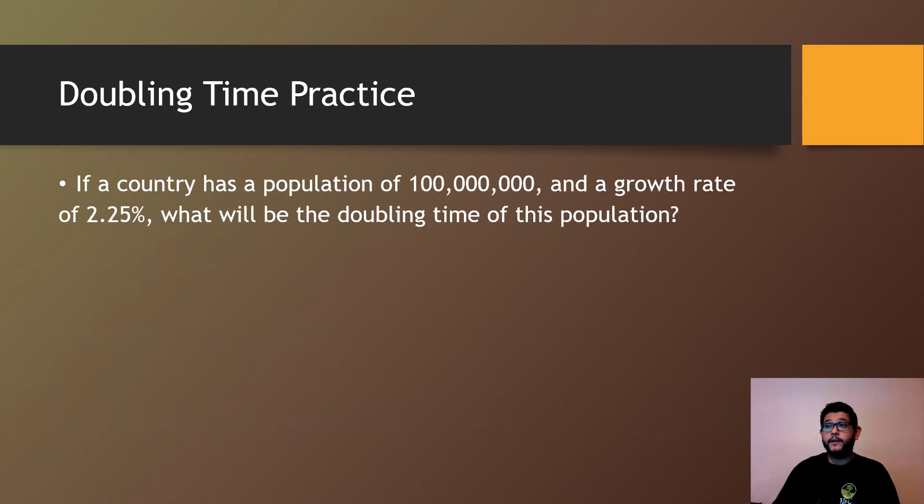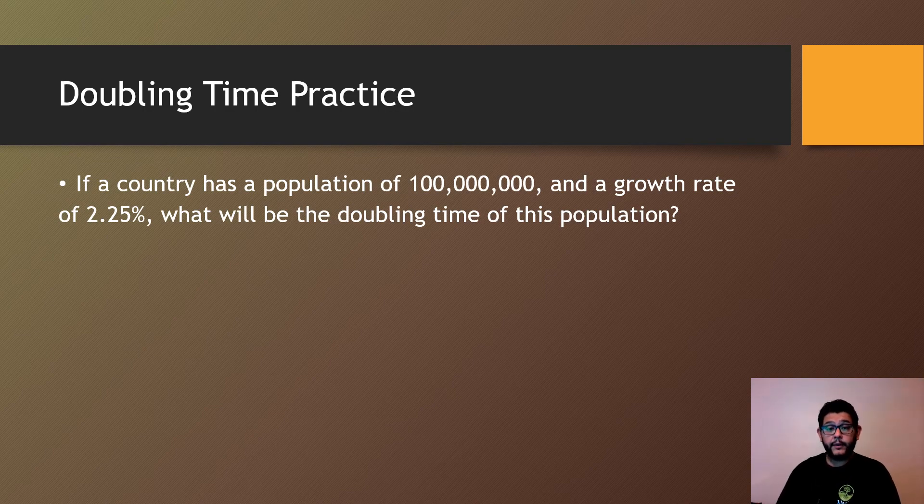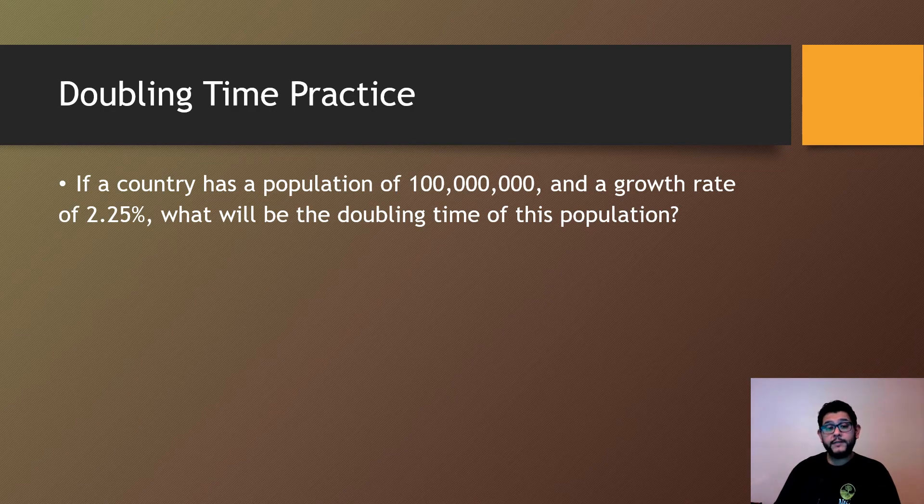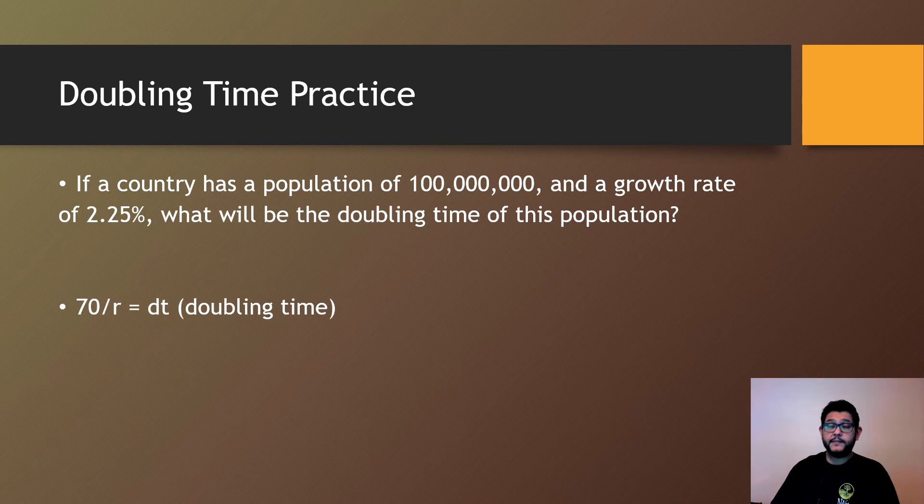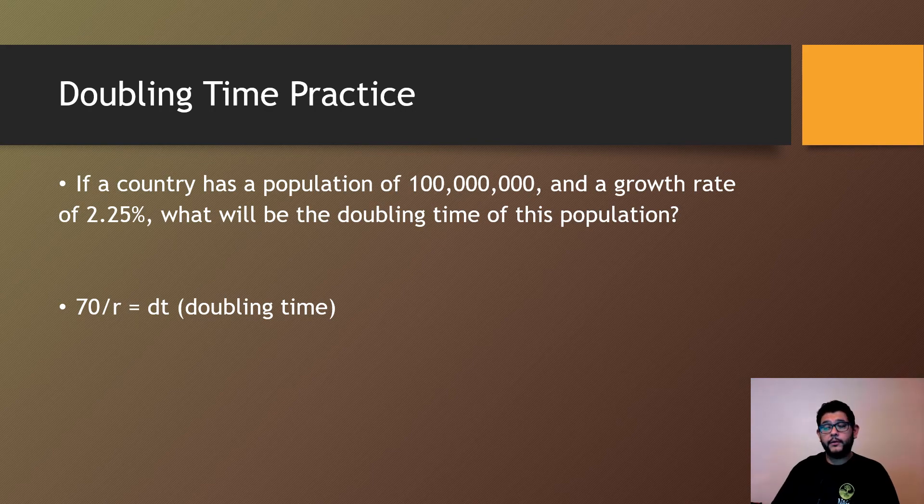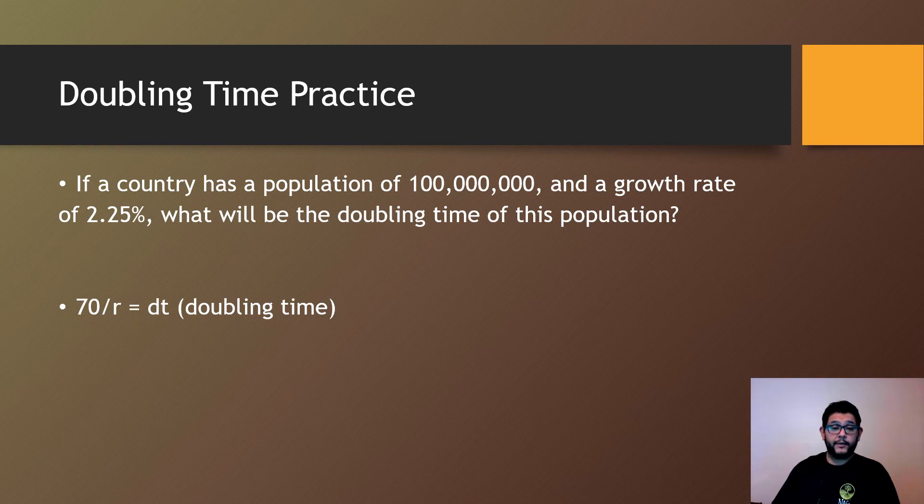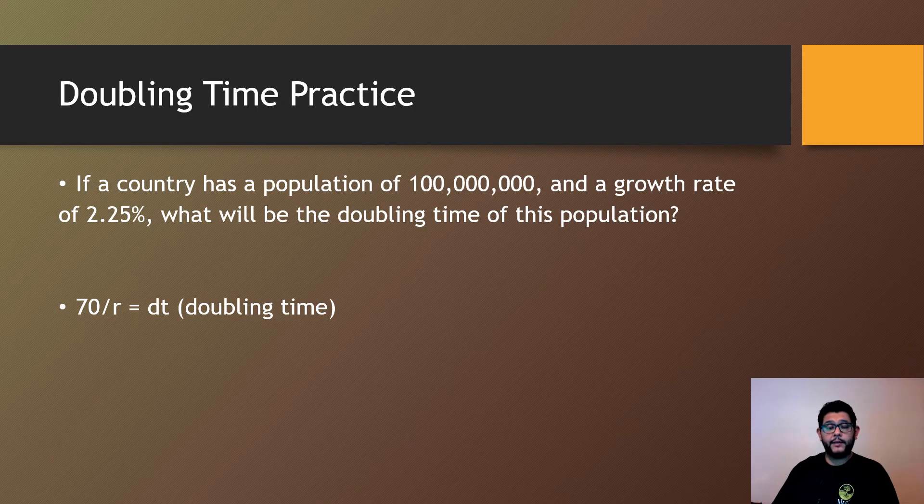So here's our example. If a country has a population of 100 million and a growth rate of 2.25%, what's going to be the doubling time of this population? So recall the equation. This is something you do have to have memorized. It's 70 divided by growth rate equals the doubling time. Take a moment. You can pause the video and take your calculator out. You will be allowed to use a calculator in a problem like this on the AP exam. Try to see if you can calculate the doubling time.